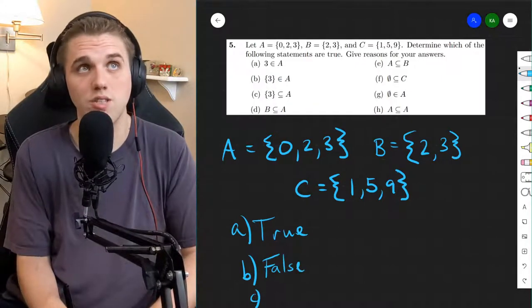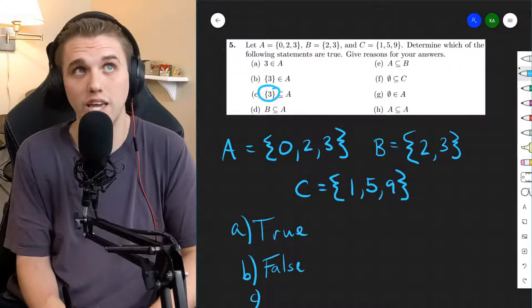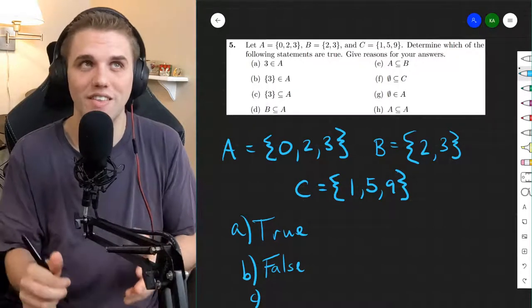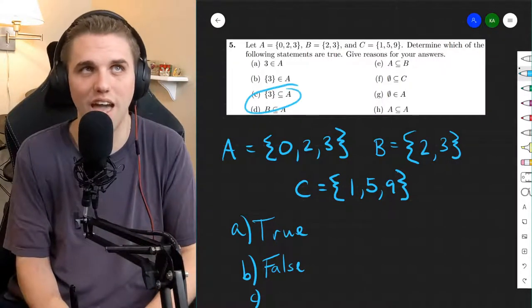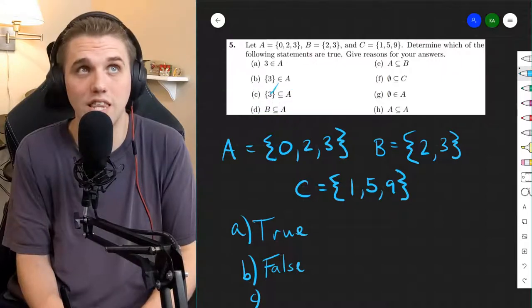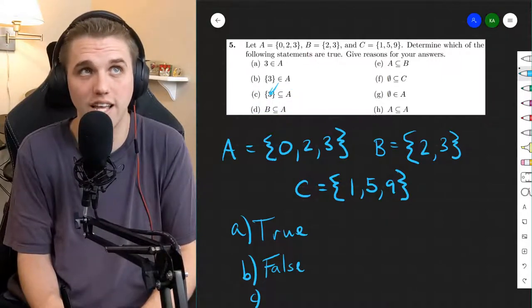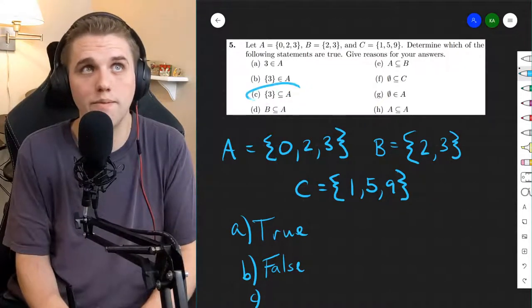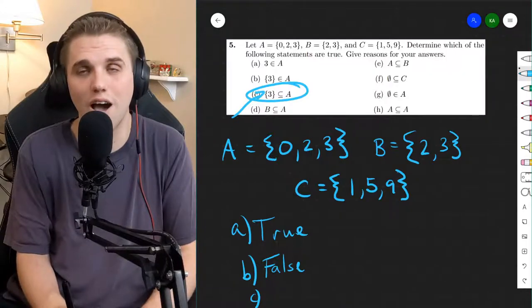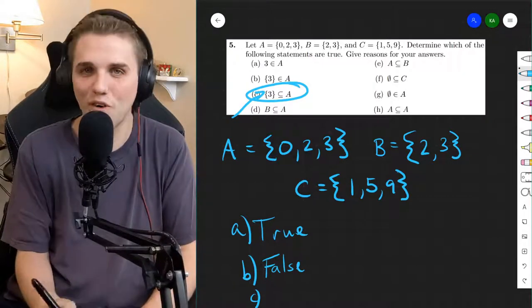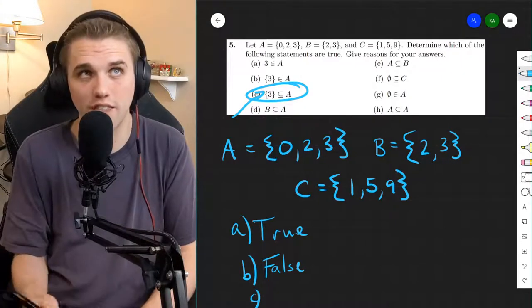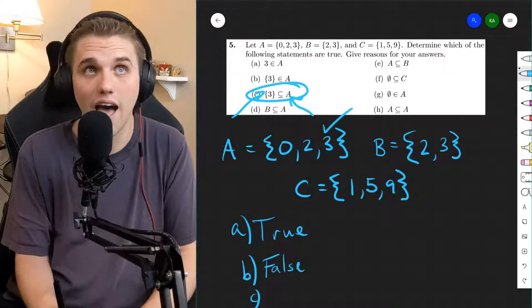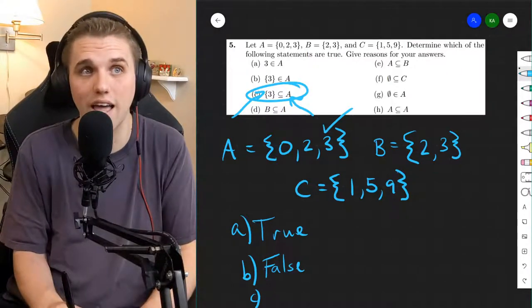Let's do part C. Part C is asking if this set containing the object three is a subset of the set A. How would we know if the set containing three is a subset of A? Well, we have to ask, is every element in this set here, set containing three, also an element of set A? So what objects are in the set containing the object three? Well, the object three. So the question then is, is three in A? Yeah, three is in A. And so because of that, C is true.